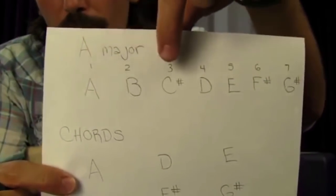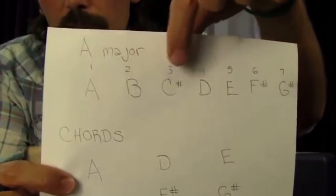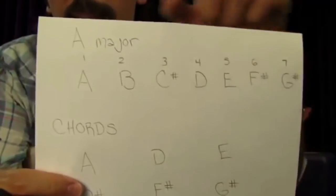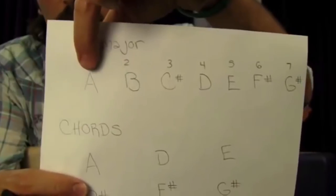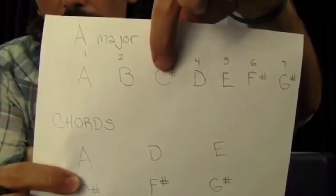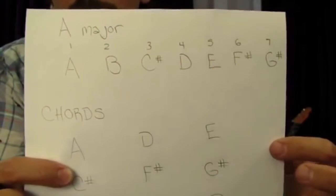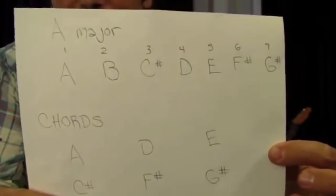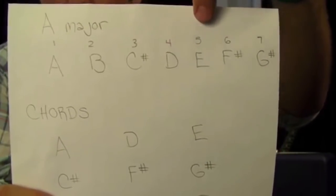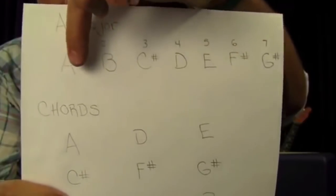The root is the one, third, and fifth degree of the scale — those three notes make up an A chord. What you do is take the root note, skip over the next note to find your third, then skip over the next note to find your fifth. For D, pretend D is the one: skip over E, your third is F sharp, skip over G sharp, and that gets you to A.